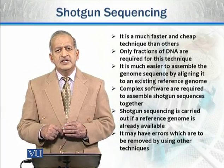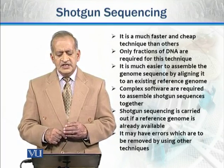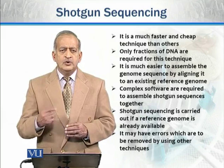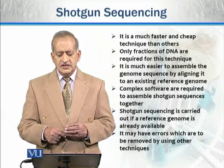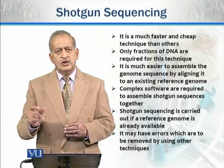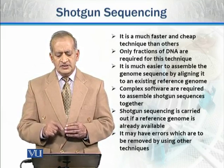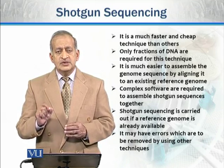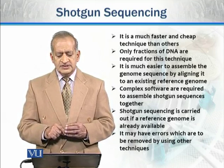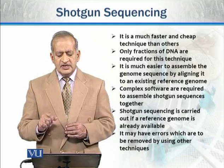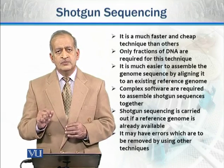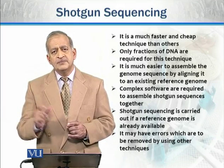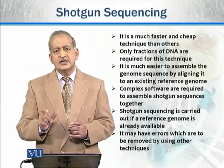Shotgun sequencing is quite faster and cheaper than other techniques. We only need small fractions of DNA in this method, so small amounts of DNA are required as compared with previous methods. It is also much easier to assemble the genome sequence by aligning it to an existing reference genome.